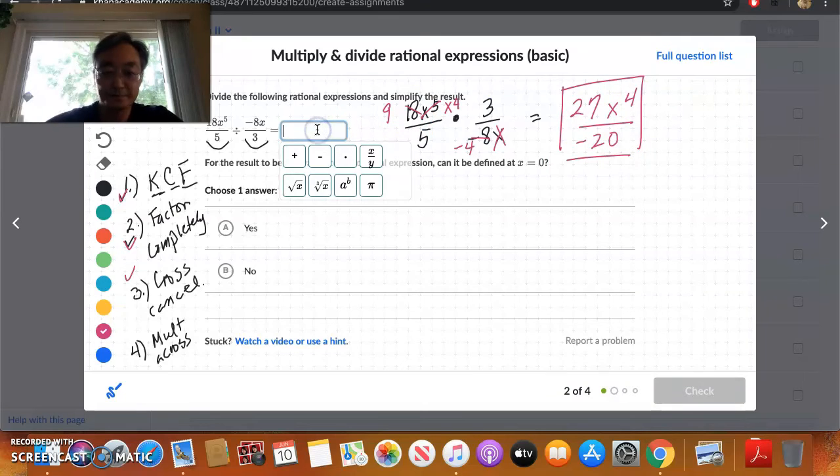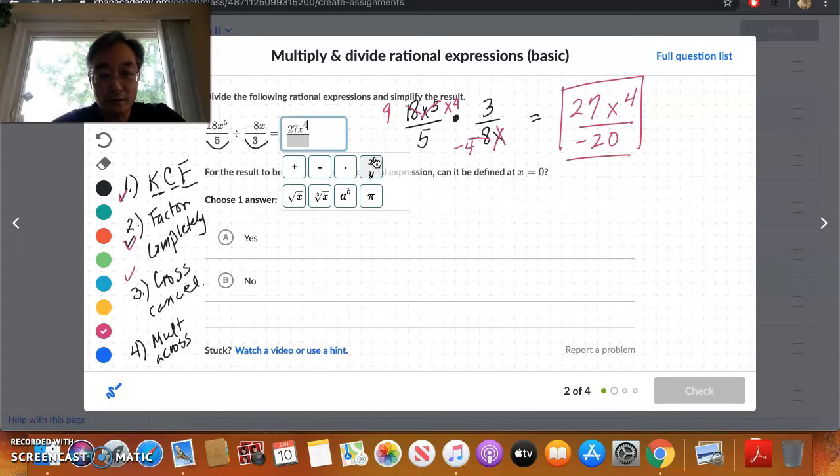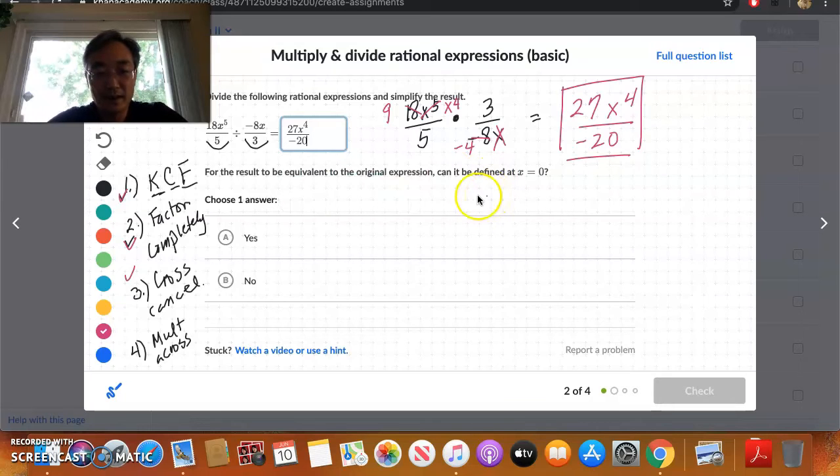So let's type that in. 27x to the 4th over negative 20. And now the second part says, for the result to be equivalent to the original correction, can it be defined at x equals 0? Well, unfortunately, once you flip this, now you have an x in the denominator, correct? So even though that x disappeared in the final expression, we still had an x in the denominator. And if that x was ever 0, this whole thing's undefined. So unfortunately, we cannot.